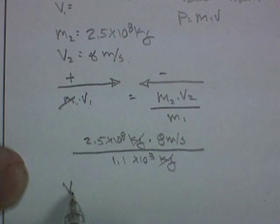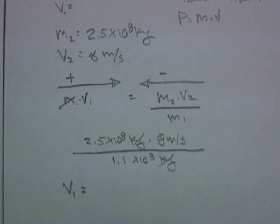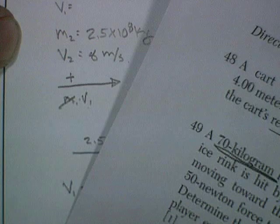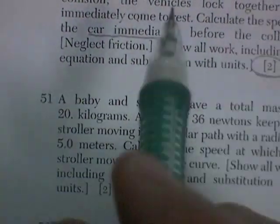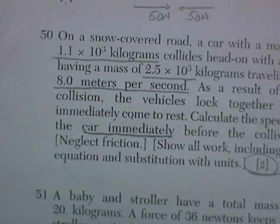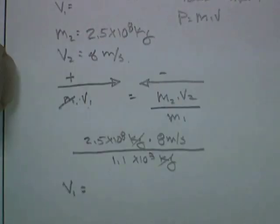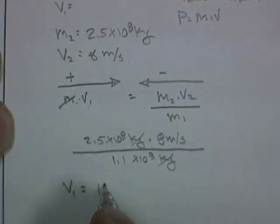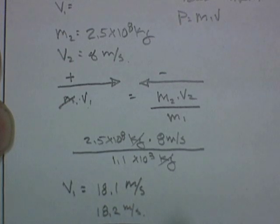So velocity 1 will equal, get the calculator out, and I'm coming up with 18.18. But the velocity they gave us was 8.0, so let's just keep one decimal point. Let's say 18.1 meters per second. Now you could obviously round that to 18.2 meters per second, because the answer was in fact 18.18. Either one of these would be acceptable as the answer.